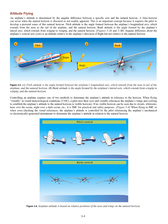Attitude flying. An airplane's attitude is determined by the angular difference between a specific axis and the natural horizon. A false horizon can occur when the natural horizon is obscured or not readily apparent. This is an important concept because it requires the pilot to develop a pictorial sense of this natural horizon. Pitch attitude is the angle formed between the airplane's longitudinal axis — which extends from the nose to the tail — and the natural horizon. Bank attitude is the angle formed by the airplane's lateral axis — which extends from wingtip to wingtip — and the natural horizon. Angular difference about the airplane's vertical axis (yaw) is an attitude relative to the airplane's direction of flight but not relative to the natural horizon.